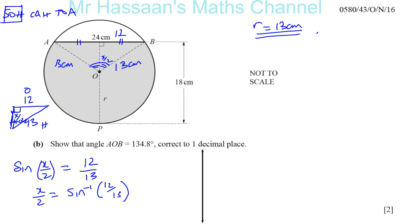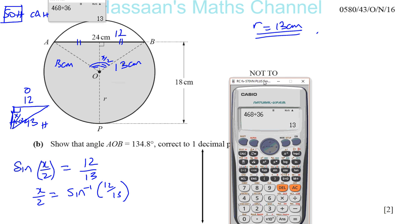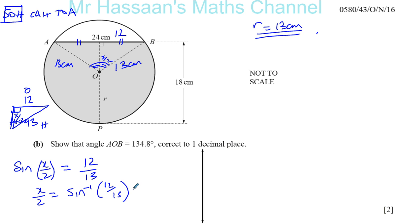We can pick out the calculator, and we can say inverse sine of 12 over 13. Close bracket. In degree mode, which it is. Always check that in case. That gives us 67.380.